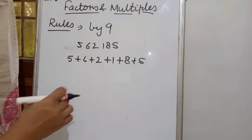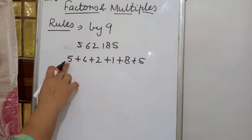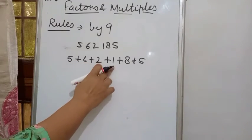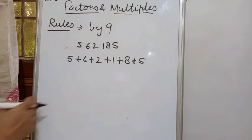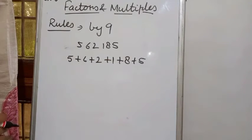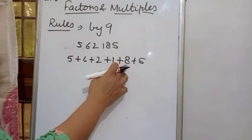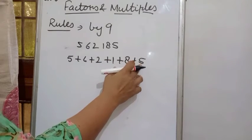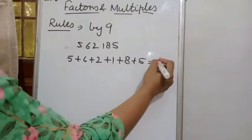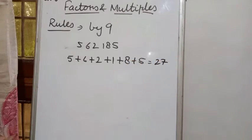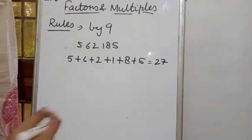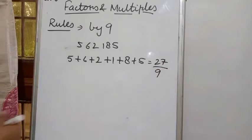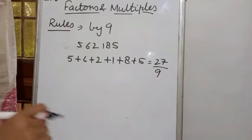So 5+6+2+1+8 — adding them: 11, 12, 13, 14, 15, 16, 17, 18, 19, 20, 21, 22, 23, 24, 25, 26, 27. The total sum of all digits is 27, and 27 is completely divisible by 9. So the whole number is divisible by 9.